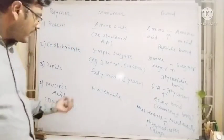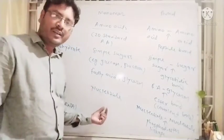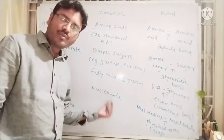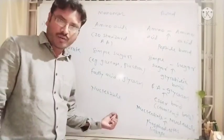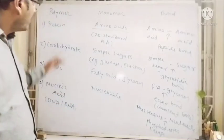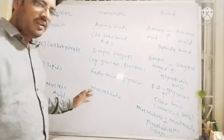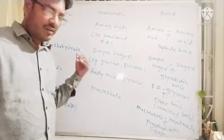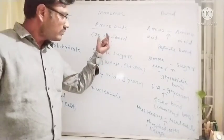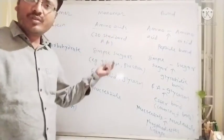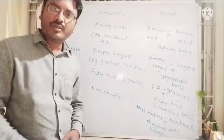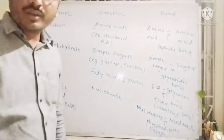A nucleotide consists of a phosphate group plus pentose sugar — in the case of DNA it is deoxyribose pentose sugar plus nitrogen bases; in the case of RNA it is phosphate group plus ribose pentose sugar and nitrogen base. This is the conceptual summary useful for examination purposes. Thank you.